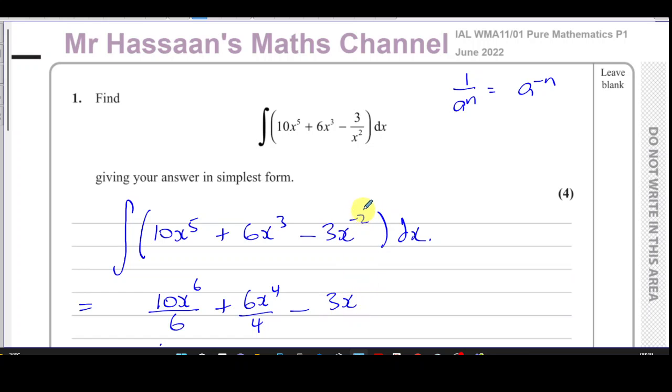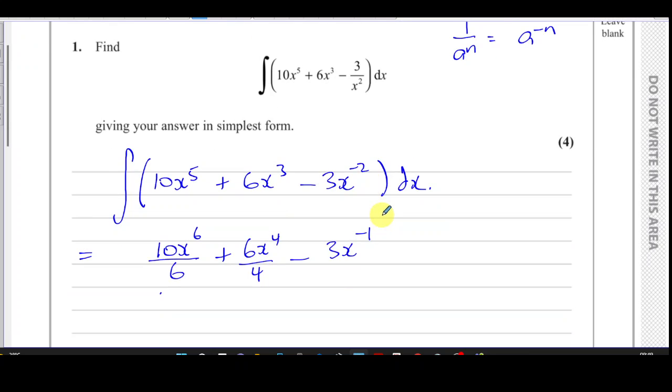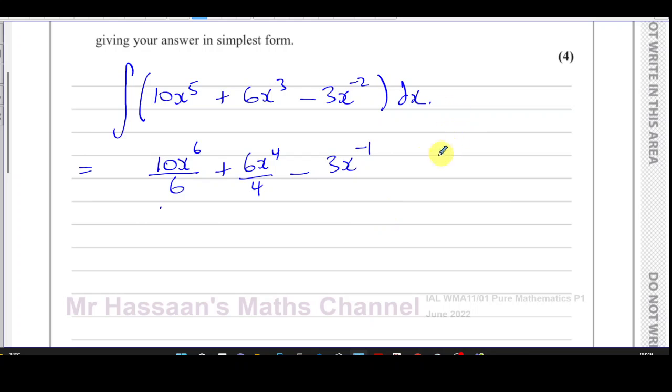And here, add one to the power. Adding one to negative 2 gives you negative 1 - remember, going upwards from minus 2 to minus 1, not negative 3. Divide by the new power which is negative 1. And don't forget with integration you must put plus c if it is indefinite integration without limits.